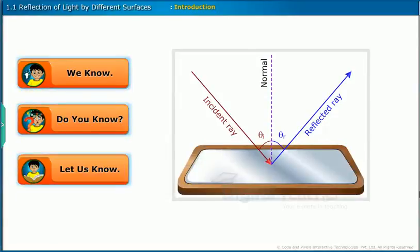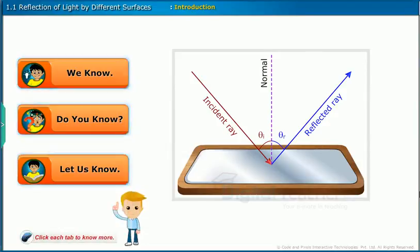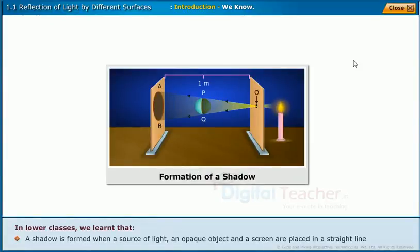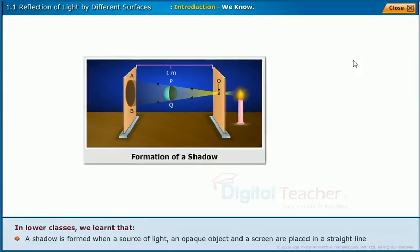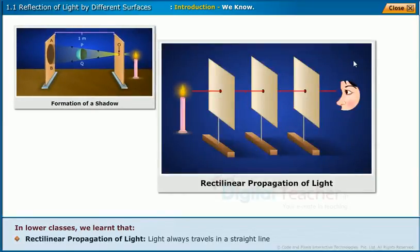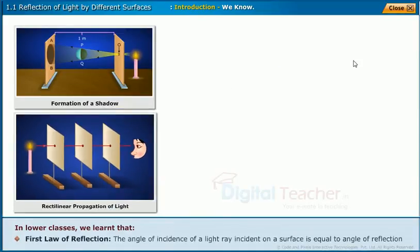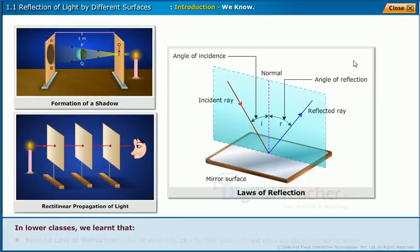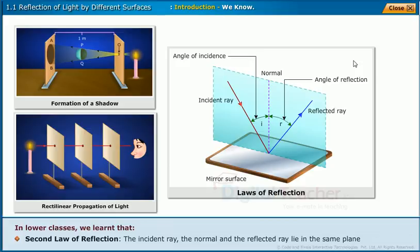Introduction. Before entering into the chapter, follow the instructions shown on the screen. In lower classes, we learned that a shadow is formed when a source of light, an opaque object and a screen are placed in a straight line. Light always travels in a straight line — this principle is called the rectilinear propagation of light. The angle of incidence of a light ray incident on a surface is equal to the angle of reflection; this is the first law of reflection. The incident ray, the normal and the reflected ray lie in the same plane; this is the second law of reflection.